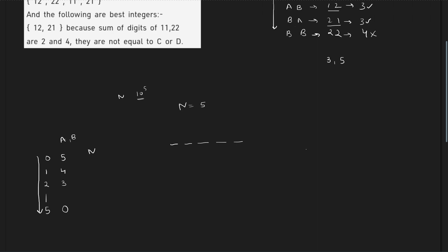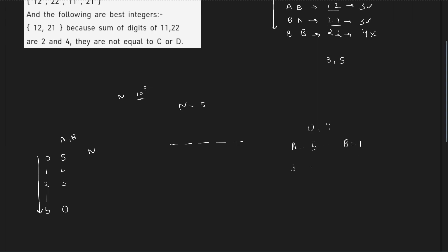With the number of a's and b's known, I can calculate the total digit sum. For example, if a=5 and b=1, and I have 3 a's and 4 b's, the total sum would be 15 + 4 = 19. So I can easily calculate the total sum.